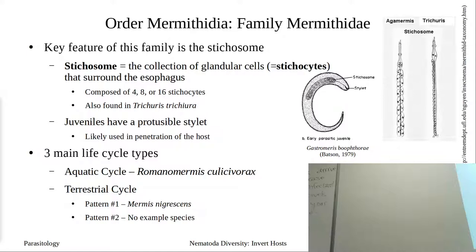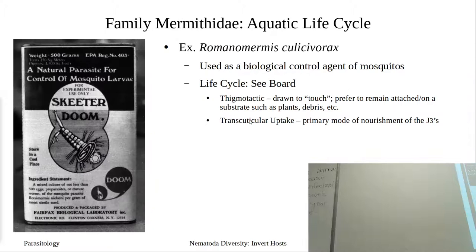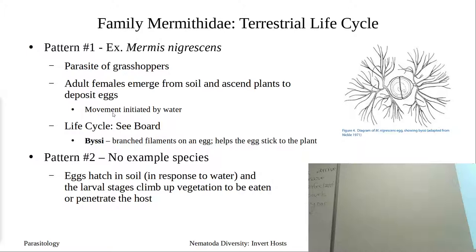We had an aquatic life cycle where we talked about Romanomermis, and then we've got two different terrestrial life cycle patterns. We did the Skeeter-Dum, Romanomermis, Ulyssiforax, and now the second terrestrial life cycle — the first pattern — is Myrmus nigriscens.